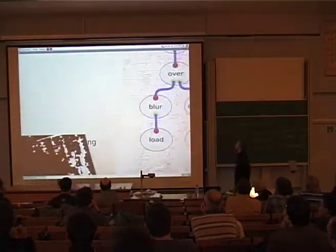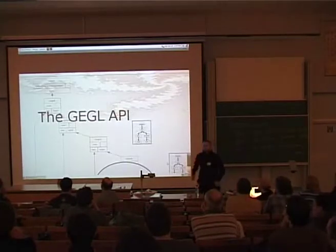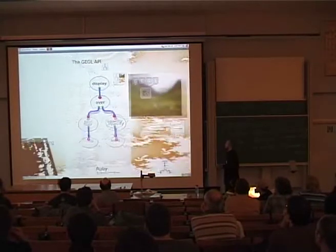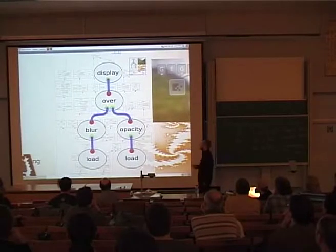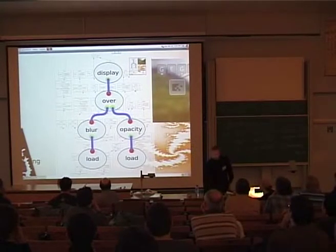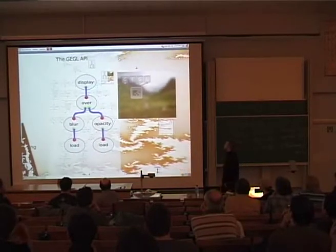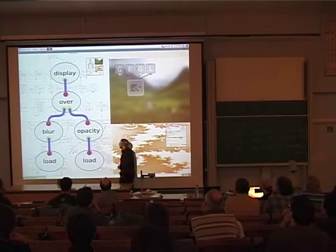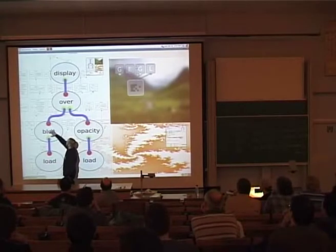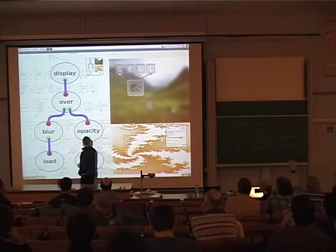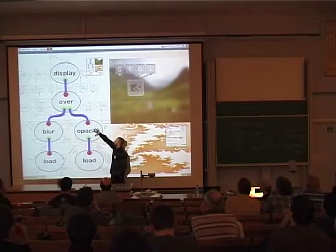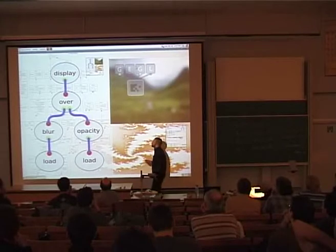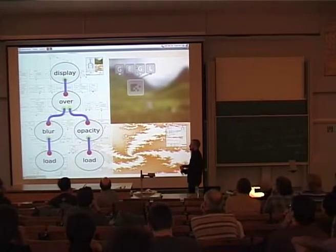Let's go forward to the GEGL API. The core of the GEGL API is that you have a graph. In the example, we have loaded an image, that image has been blurred, and over that image we place another loaded image whose opacity has been adjusted. The end result is displayed. The terminology in GEGL for describing this is a compositing or processing graph.